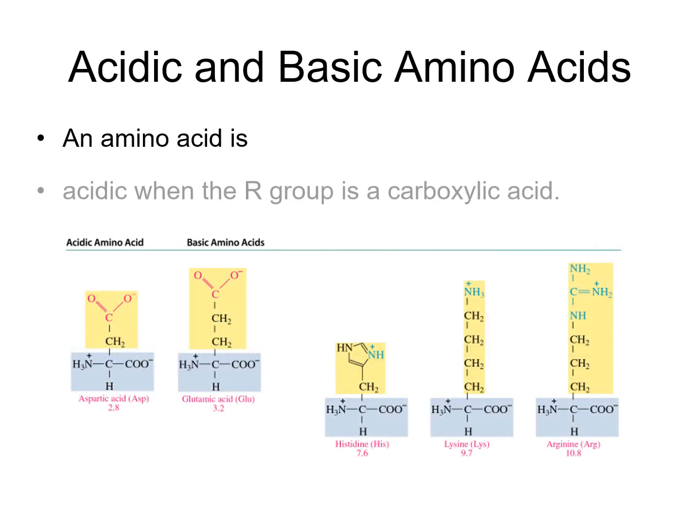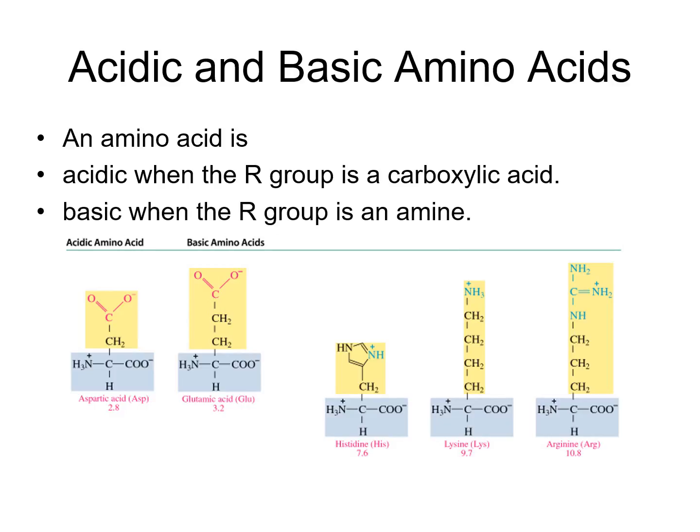The acidic and basic amino acids are those with a carboxylic acid group or an amine group on the side chain. Aspartic acid and glutamic acid have the acidic form (COOH), though the H+ has been removed in the zwitterion form. Histidine, lysine, and arginine are the examples with amine groups or nitrogen-hydrogen groups on their side chains, making them basic.